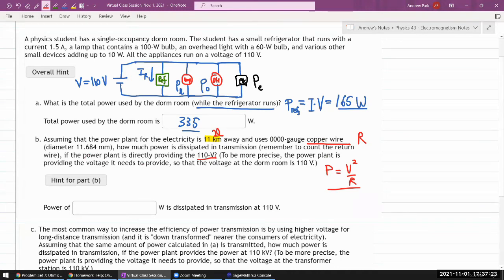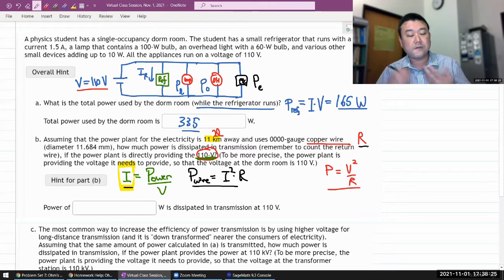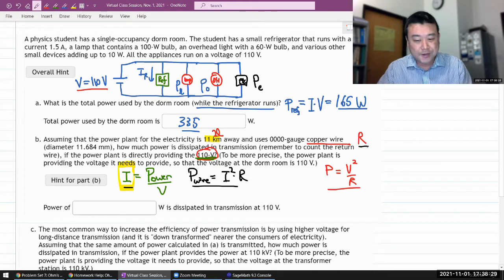So if the power plant is directly providing the 110 volts, then what you have to look out for is, okay, how much current is needed to maintain this 110 volts here? So you work out, okay, the current that the power plant is providing to this whole house or the circuit is the amount of total power divided by the voltage at which it's providing this. So you need to work out that first. Once you have the current, then that's what you can use to calculate how much power was dissipated in the wire. You can calculate that with my power dissipated in the wire is the current squared times R.